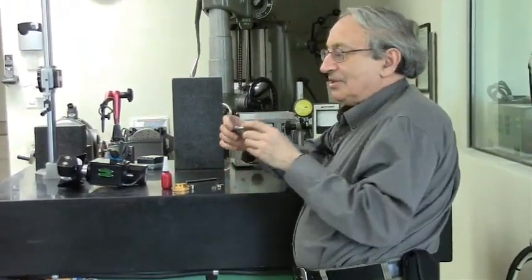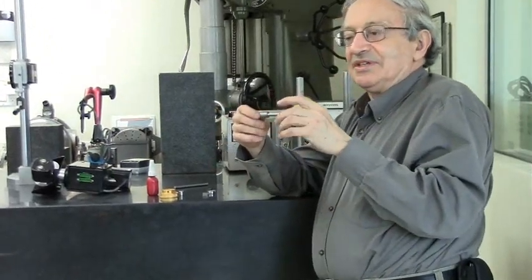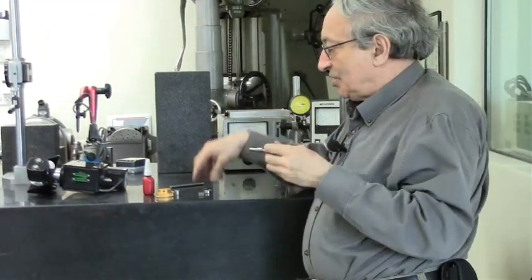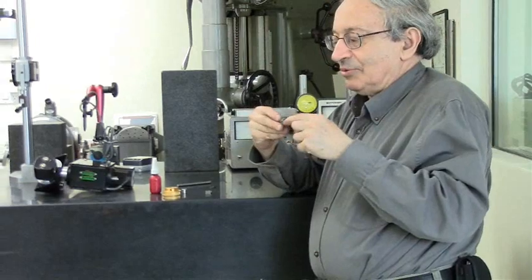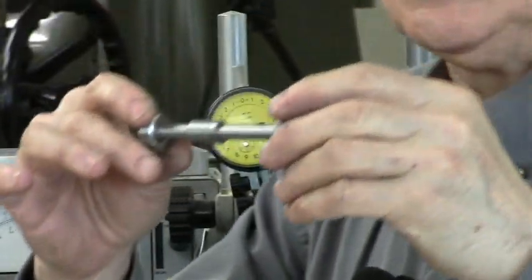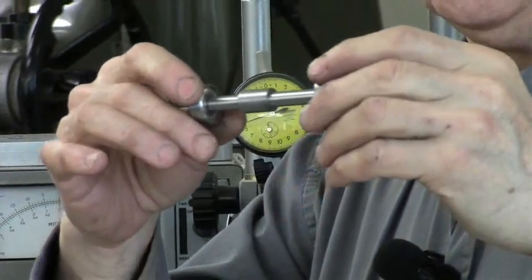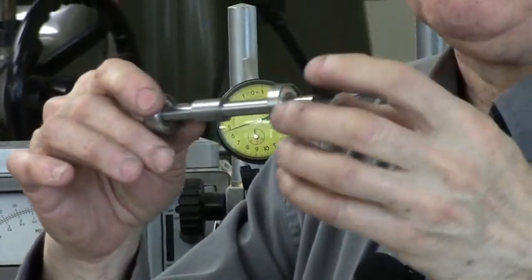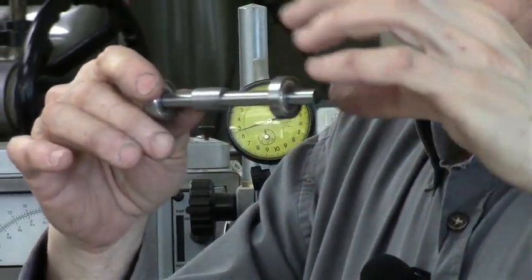Because these bearings were designed always to work in preloaded pairs. So if I wanted to make this shaft in a housing, I would put a bearing at each end and I would preload the bearings against each other.